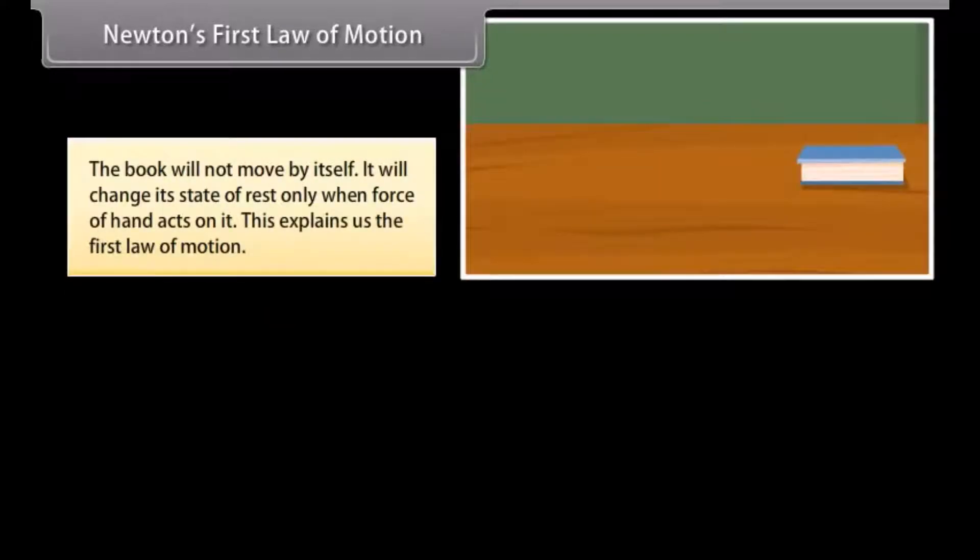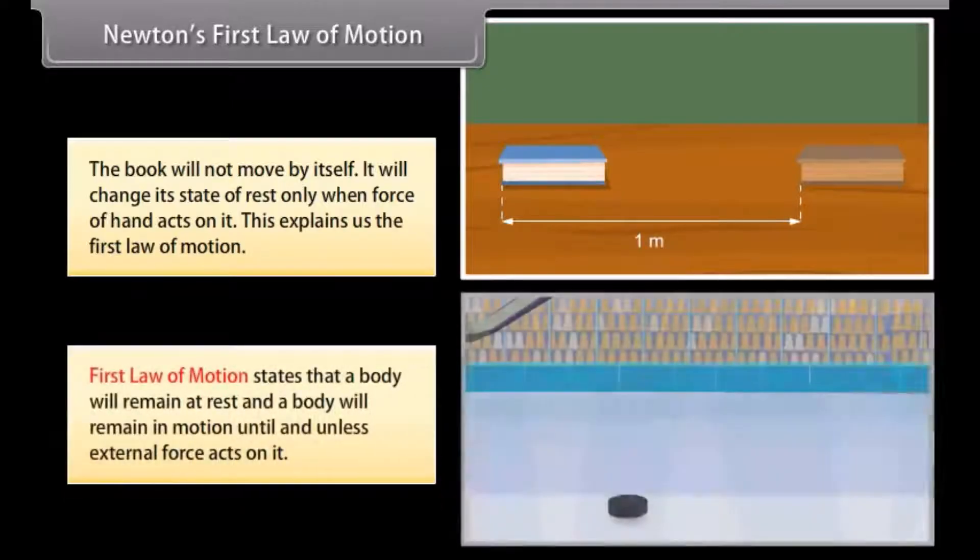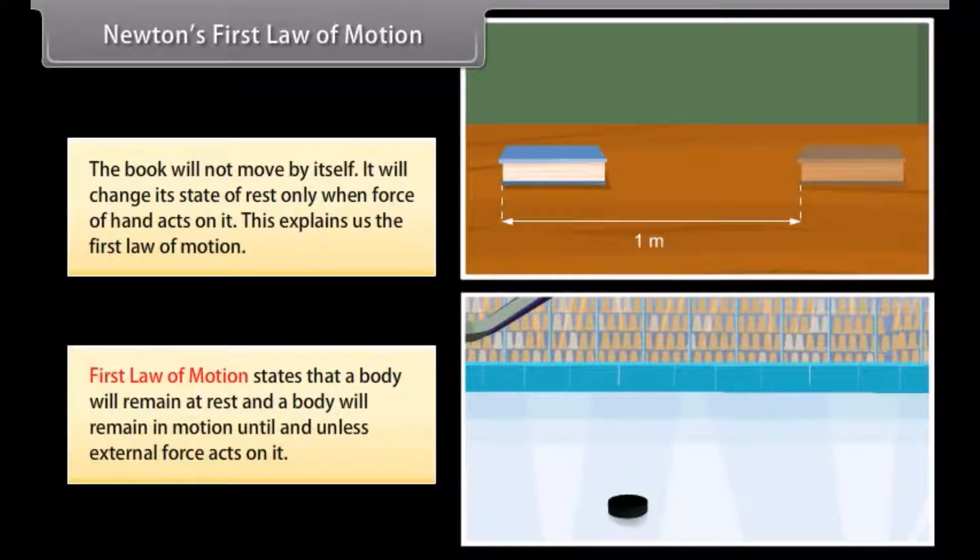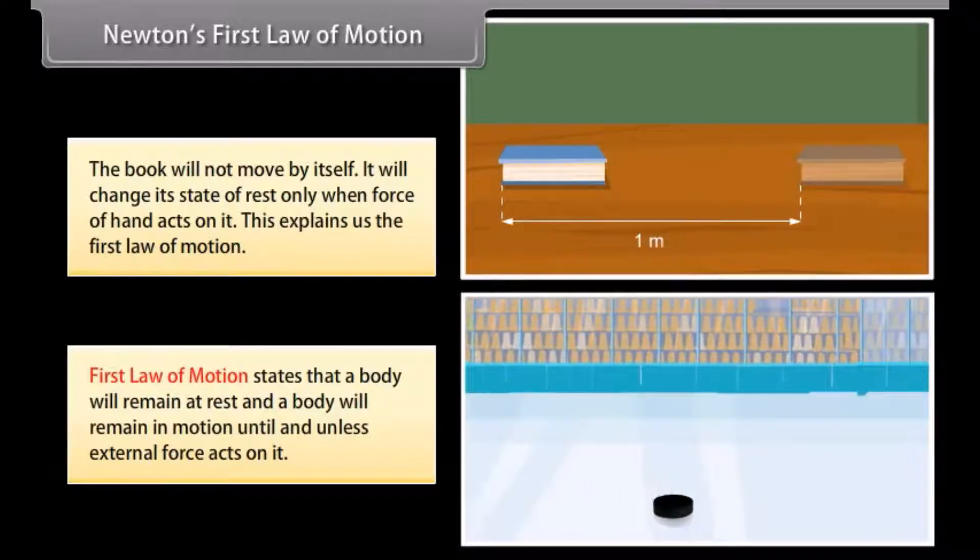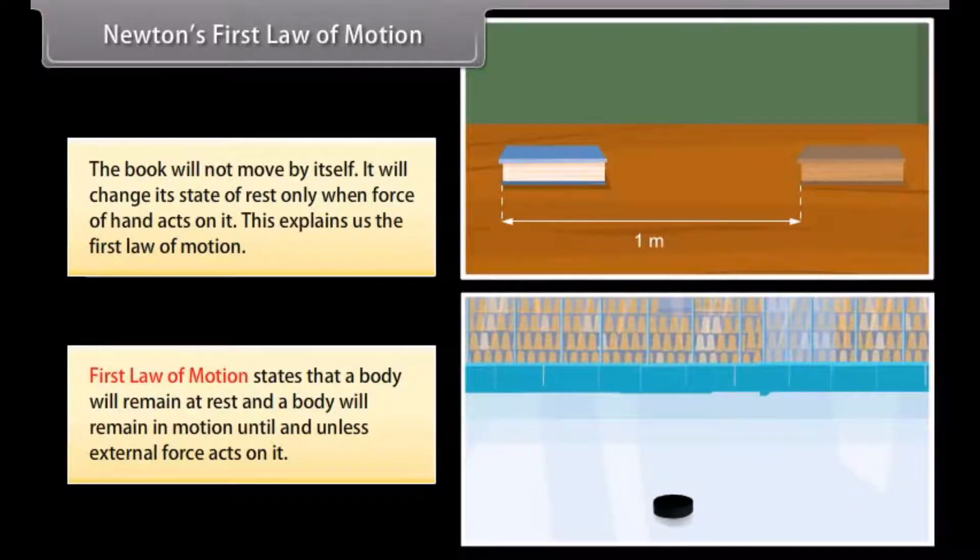The book will not move by itself. It will change its state of rest only when force of hand acts on it. This explains us the first law of motion. First law of motion states that a body will remain at rest and a body will remain in motion until and unless external force acts on it.